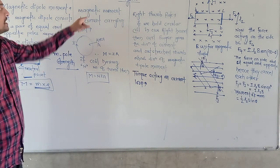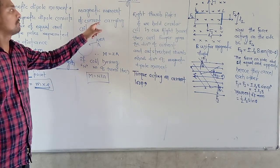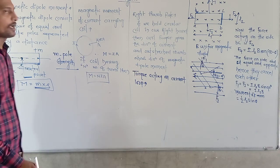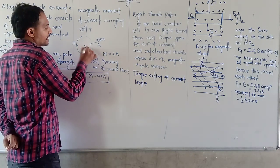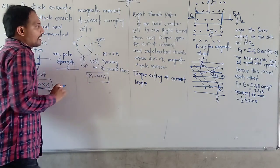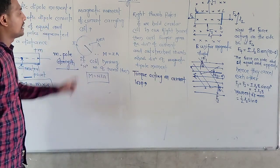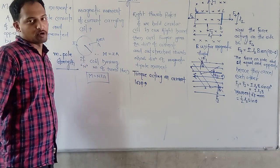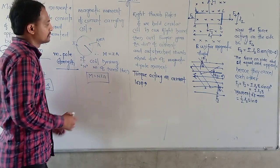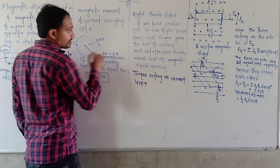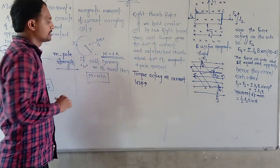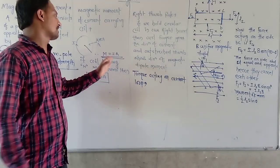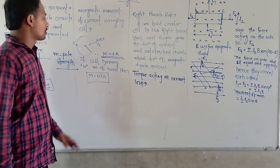For the magnetic moment of a current-carrying coil, suppose we consider a current-carrying circular coil which has current I and area A. Then the magnetic dipole moment for that current-carrying coil is M, equal to I into A, where I is the current and A is the area of the circular coil.